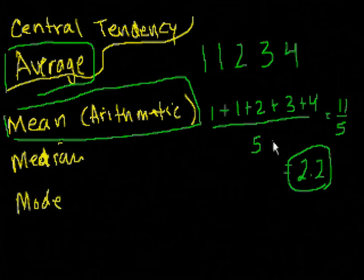Another measure, instead of averaging it in this way, you can average it by putting the numbers in order, which I actually already did. So let's just write them down in order again. 1, 1, 2, 3, 4.